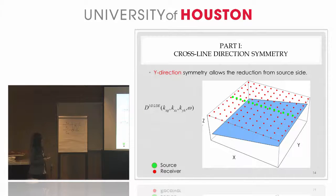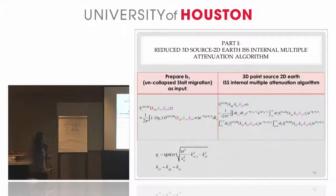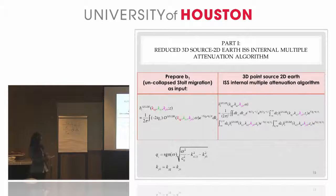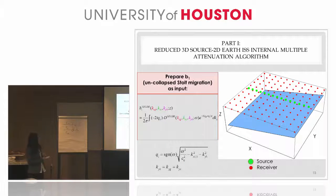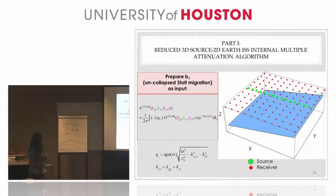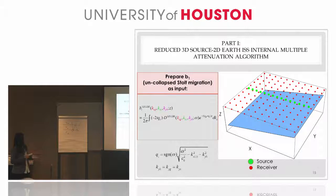So for each shot, you still need the area coverage of all the receivers. Here is the reduced algorithm we obtain. For the math details, I refer you to my report. You can see that the input requires the line coverage of all the sources and the area coverage of all the receivers for each shot. Please notice that until now we did not apply any approximation — this is the algorithm without any approximation, reduced for the 2D subsurface.